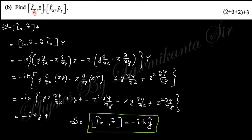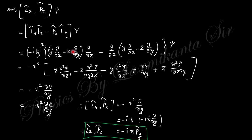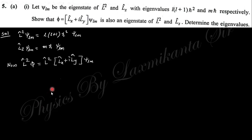Next, find the commutator of Lx. Substituting the definition of Lx and taking partial derivatives gives the required expression. For Pz, substituting its value and taking the derivative gives the final commutator result. This is one question I could not solve at the moment; if anyone can solve it, please put the answer in the comment box.